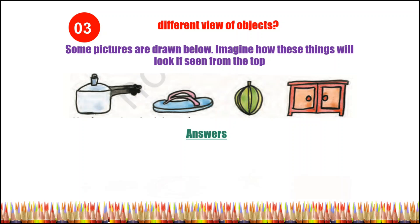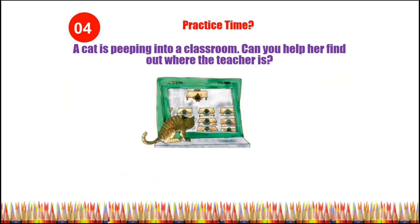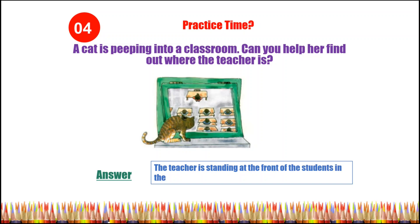Let us check answers. Number four practice time: A cat is peeping in a classroom. Can you help the cat to find out where the teacher is? Answer: The teacher is standing at the front of the students in the class.